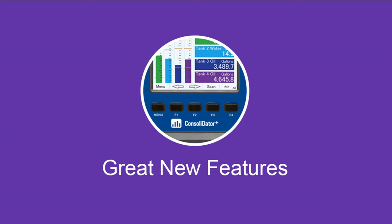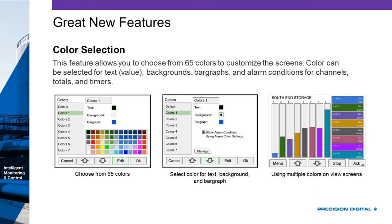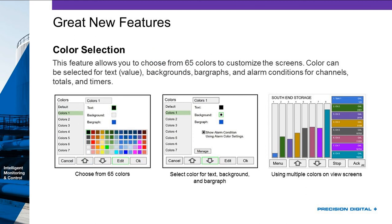Now let's dive in and take a look at those new features. The most noticeable — and one of the best — is the color selection on our full color screen. You can now choose from 65 colors, and you can see what that palette looks like. When you go into programming, you can choose from 65 colors that can be selected for the text, the background, and the bar graph. You can also set up alarms to trigger specific background colors, bar graph colors, and text colors — and you can even have it flash.